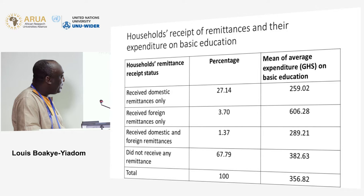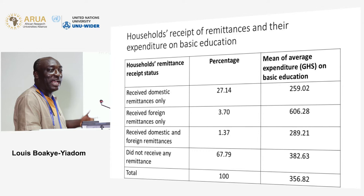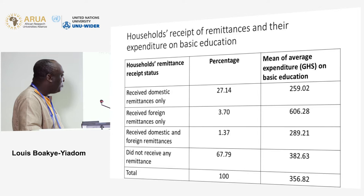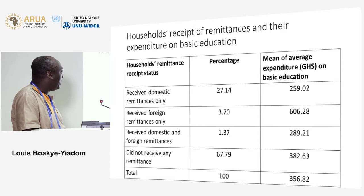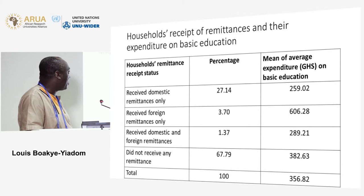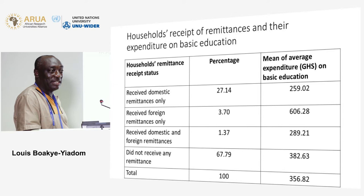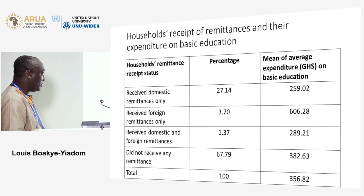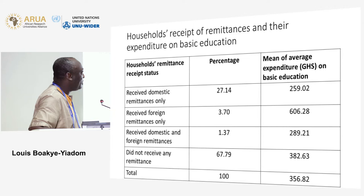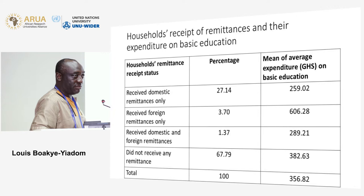These are the percentages — I was a bit surprised. It turns out that about 32 percent of households in Ghana receive remittances. By far the dominant group is those households that receive domestic remittances only. A very small percentage receive only foreign remittances, and an even smaller percentage receives both domestic and foreign remittances. The third column shows the average expenditure of these households on basic education.